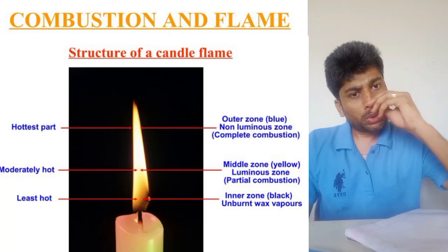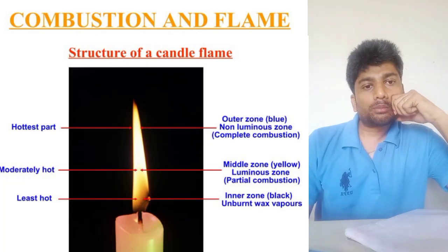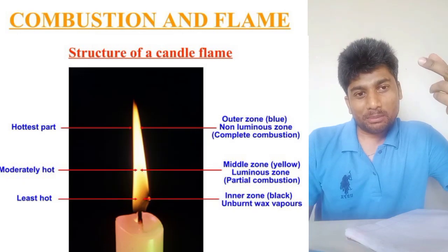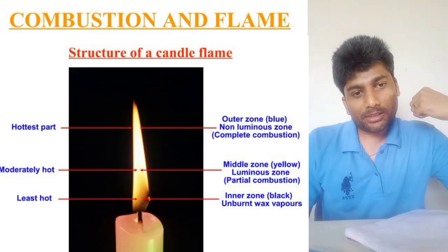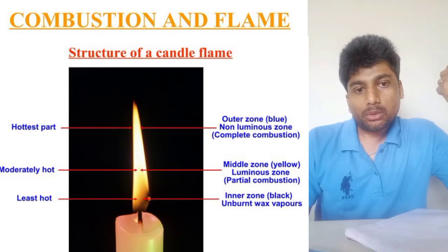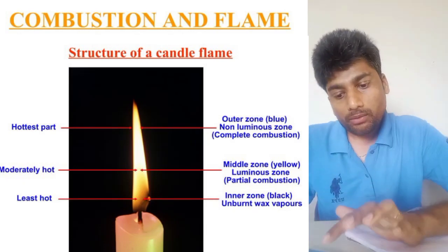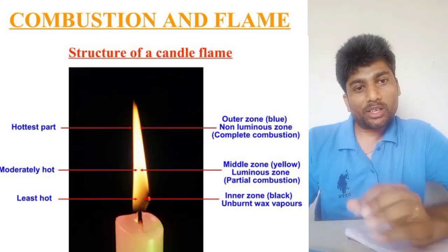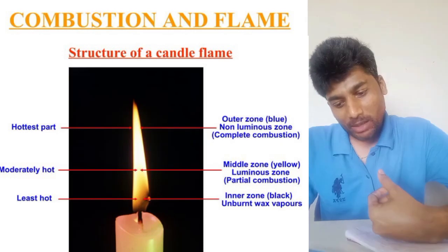Where the candle is burning, that is exactly where you can see the flame. It is a yellowish or light orange color. This area is called the zone of combustion, which is the major part of the flame.